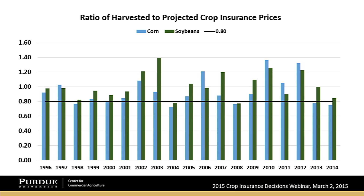A couple of things jump out. First, this demonstrates the value of purchasing revenue insurance with the harvest price option. In years when prices went up substantially, your revenue guarantee effectively went up as prices rose — ostensibly because yields were going down nationally. The big example is 2012. With revenue protection with the harvest price option, there was a fairly significant payment per acre in White County. If you had chosen revenue protection with the harvest price exclusion, there would have been no payment.